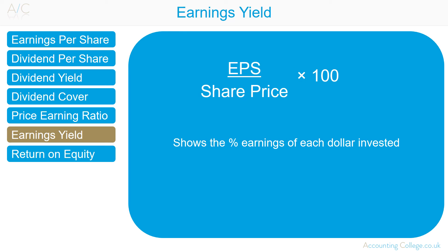The earnings yield is earnings per share divided by share price. It is the inverse of the price earnings ratio and shows the percentage earnings of each dollar invested. It indicates how much return shareholders' investment in the company earned over the past 12 months. Earnings yield is used by many investment managers in comparison to other shares or investments, and investors like to see a steady increase in earnings yield.